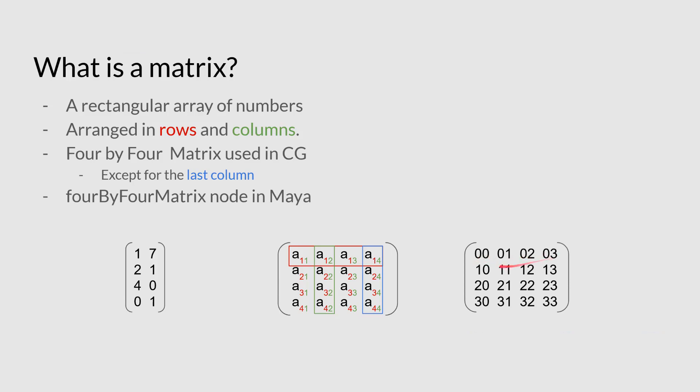So this is the 0 row, the 1 row, the 2nd row, 3rd, and then this is 0 column, 1 column, 2 column, 3 column.